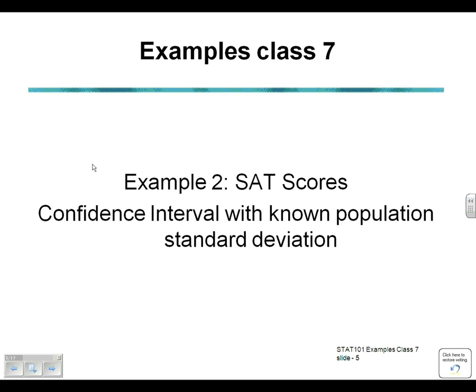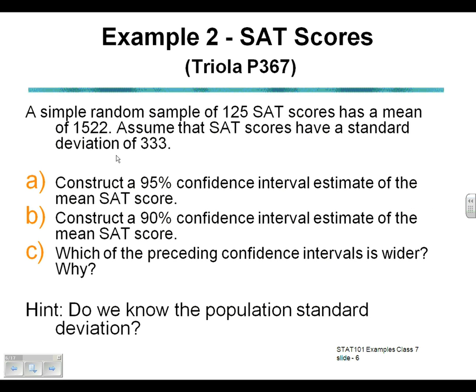On to the second example. This time we're using an example where we have a known population standard deviation. We're told we're allowed to assume that the SAT scores have a standard deviation of 333. That means we can assume this gives us a value of sigma, the population standard deviation, and so it allows us to use the z-distribution.